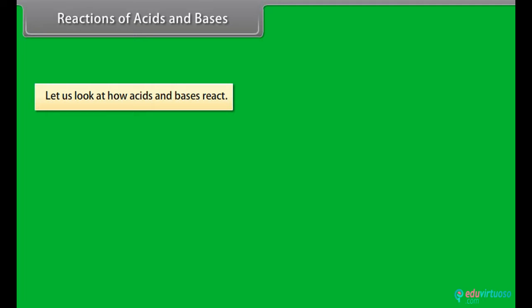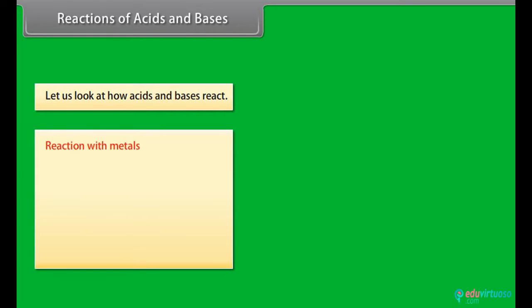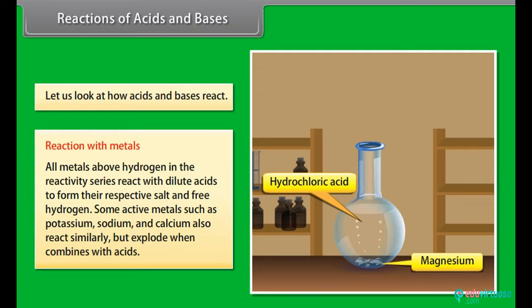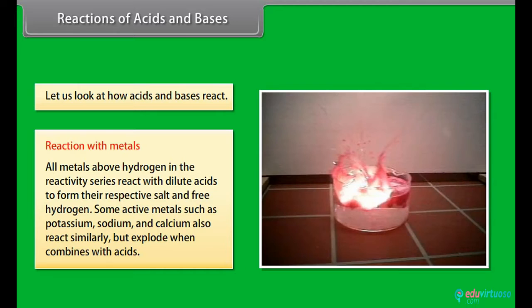Let us look at the different reactions of acids and bases with metals, metal carbonates, and metal hydrogen carbonates, and with each other. Reaction with metals. All metals above hydrogen in the reactivity series react with dilute acids to form their respective salt and free hydrogen. Active metals such as potassium, sodium, and calcium also react similarly but explode when combined with acids.